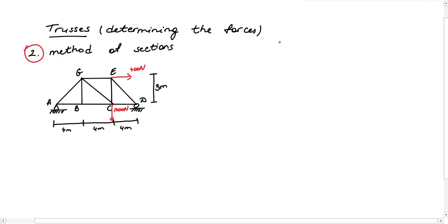Second method was method of sections. Maybe you wonder why there are two methods or more than that. What are differences? If we need to find the force in only a few members of truss, in this problem they are GE, GC and BC members, we use this method. It is based on the principle that if the truss is in equilibrium, then any segment of the truss is also in equilibrium.